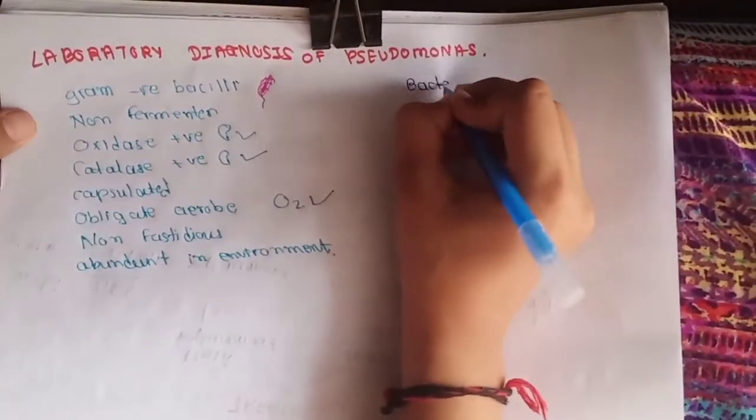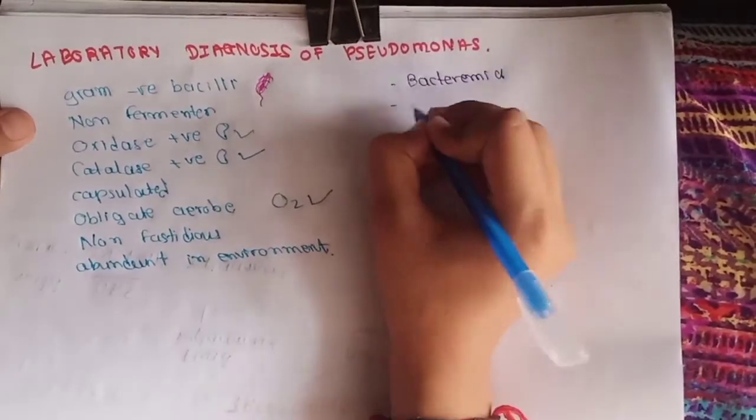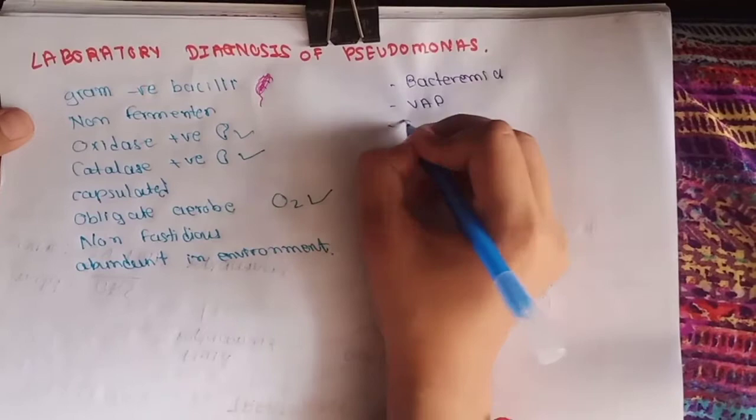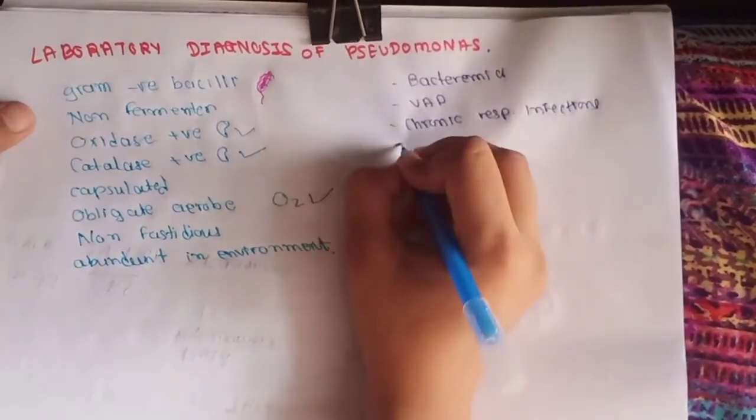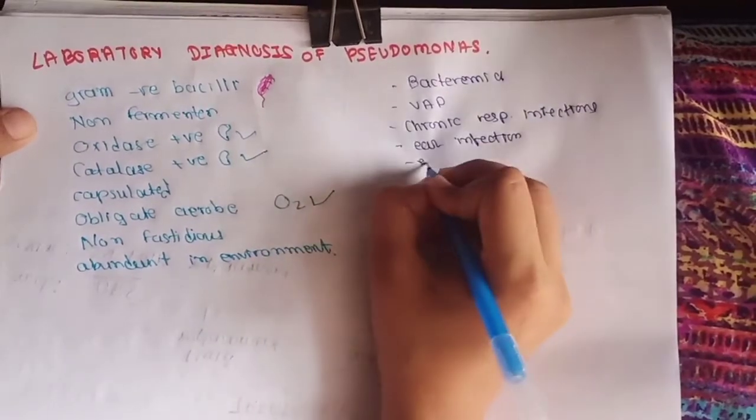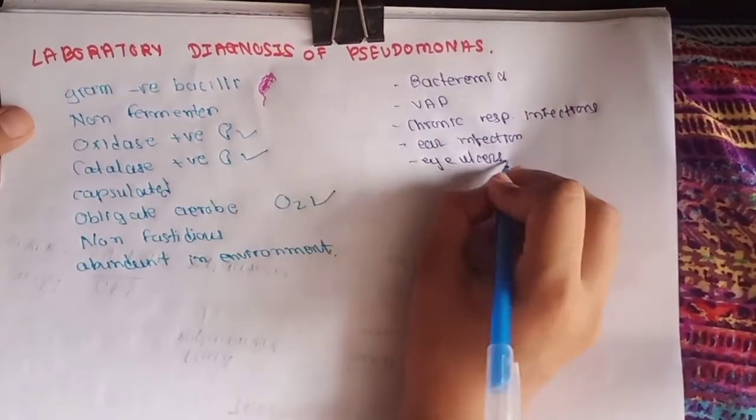We can suffer from bacteremia, ventilator-associated pneumonia, chronic respiratory tract infections, ear infections, eye infections, skin and soft tissue infections.